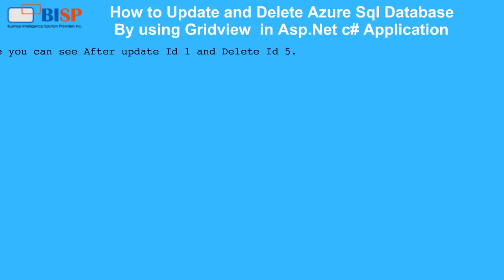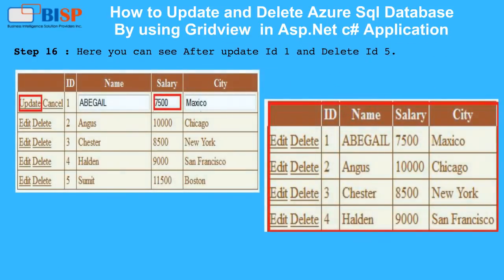Step 16: Here you can see the result after updating ID 1 and deleting ID 5.